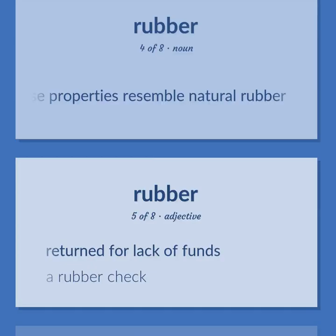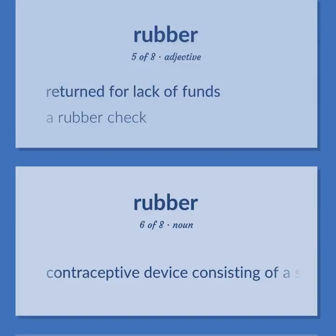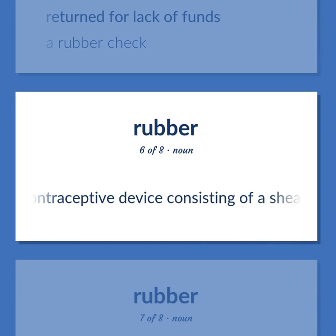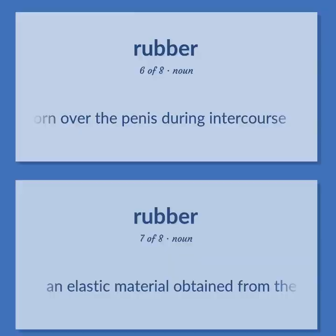Returned for lack of funds — a rubber check. Contraceptive device consisting of a sheath of thin rubber or latex that is worn over the penis during intercourse.